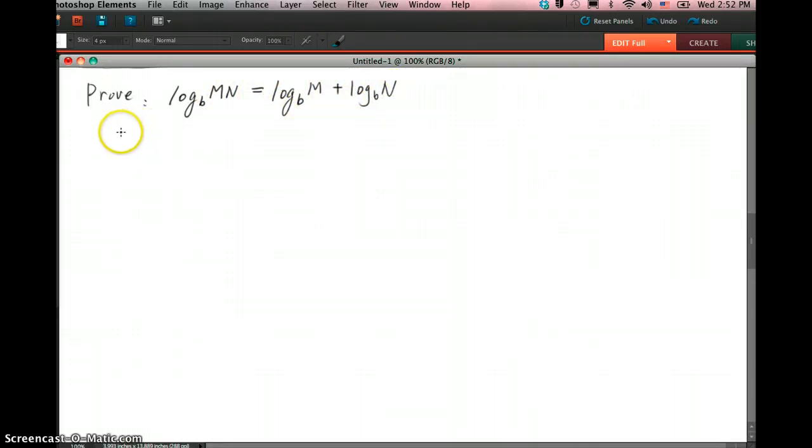We can let log base b of M equals m. So you can tell the little m is going to be the exponent. So then we're actually going to turn this into exponential form. We would write b as a base, m exponent equals the big M, which is the power.